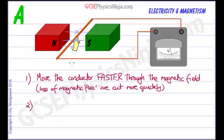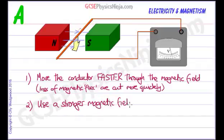So the second thing is, how could we cut more lines per second? Well, we can move it faster, but we could also use a stronger magnet. A stronger magnetic field. Now, what that does is to increase the number of magnetic field lines. It makes them closer together, more dense, more densely packed.